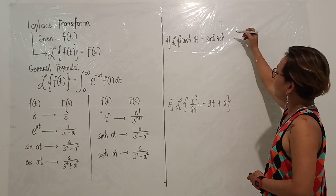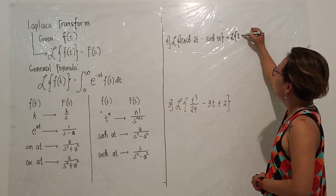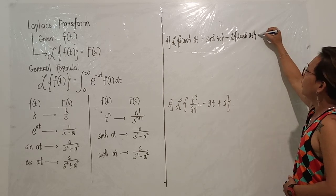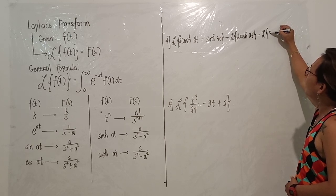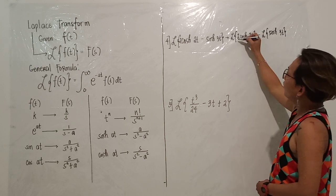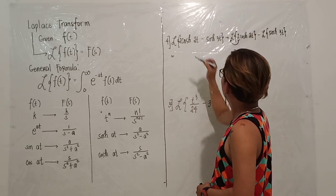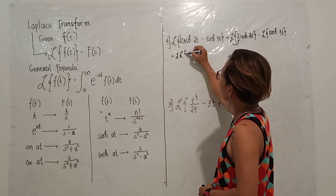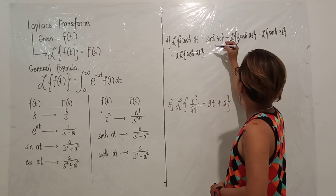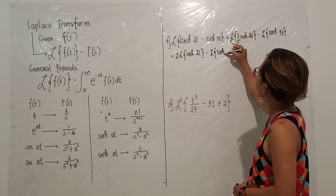In this case, we can apply linearity and write this as the Laplace transform of 2 hyperbolic cos 2t, minus the Laplace transform of hyperbolic sin 3t. Since 2 is a constant, we can factor it out: 2 times the Laplace transform of hyperbolic cos 2t, minus the Laplace transform of hyperbolic sin 3t.